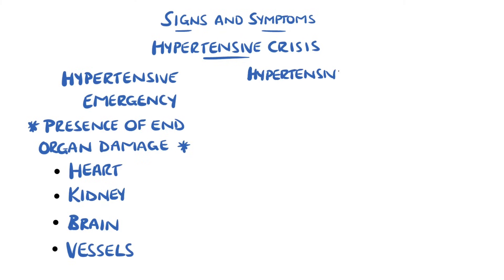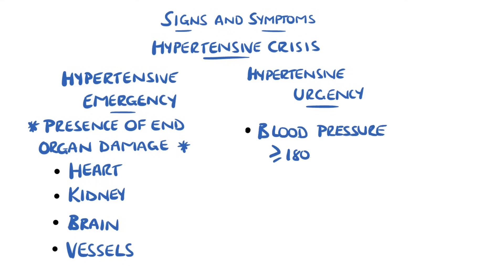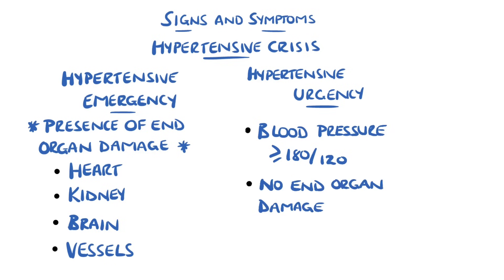Hypertensive urgency is also a form of hypertensive crisis, where the pressure is above 180 systolic or 120 diastolic, but there is no evidence of damage to the organs, and it is mostly asymptomatic.